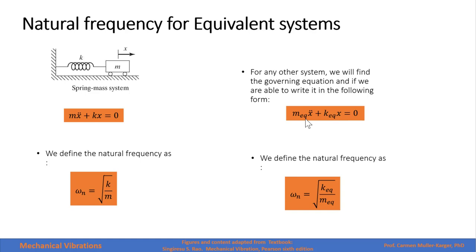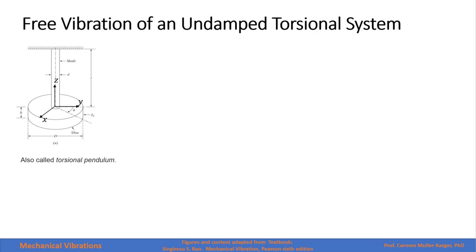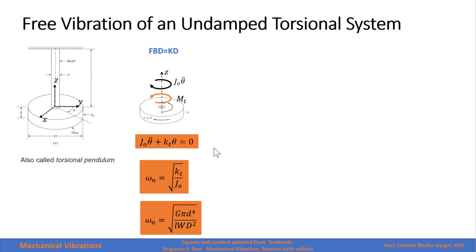We will work with a free vibration, un-damped torsional system. We have a coordinate system where XY is in the plane of the disc and Z is along the axis of the shaft. When we do the free body diagram with a clockwise displacement, we have a moment from the torsion of the shaft acting in the opposite direction. The equation of motion is obtained by adding the external moment and the inertial moment, which is the mass moment of inertia with respect to O times the angular acceleration.